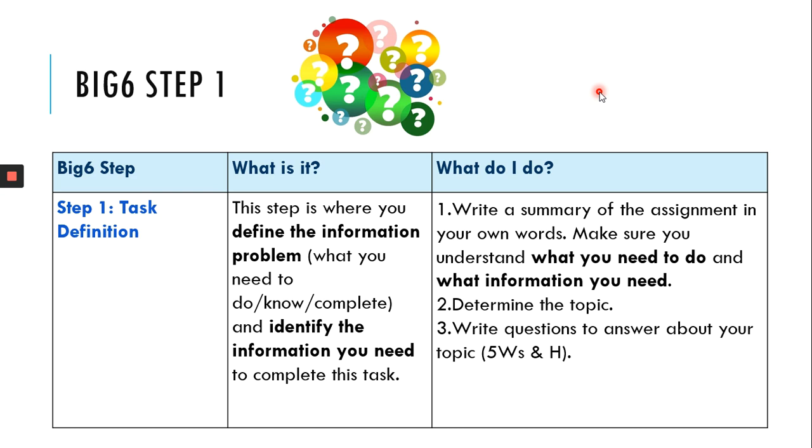So first, write a summary of the assignment in your own words, make sure you understand what you need to do and what information you need, determine the topic you're going to focus on, and write questions to answer about your topic. And so a good rule of thumb for that is use the five W's: who, what, when, where, why, and then your H, which is how.